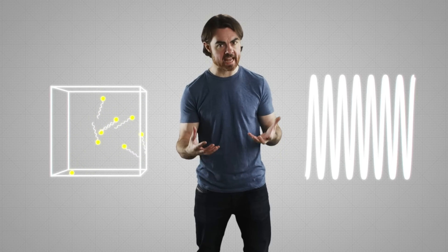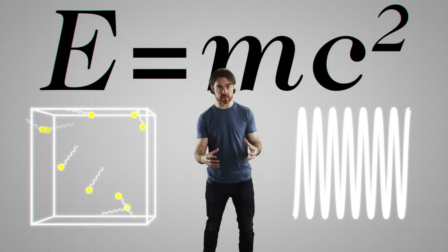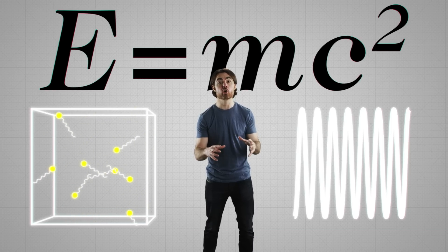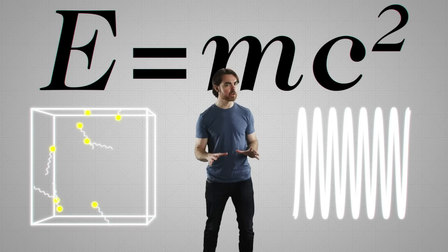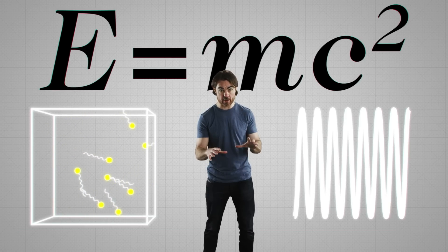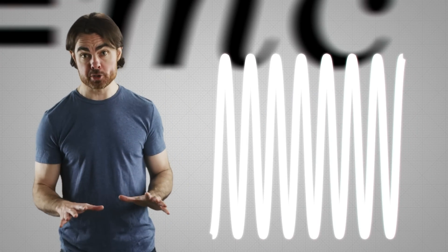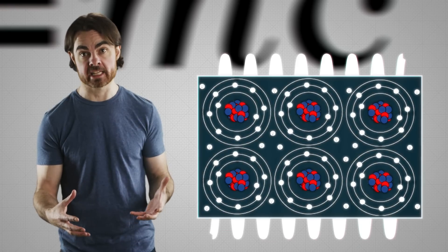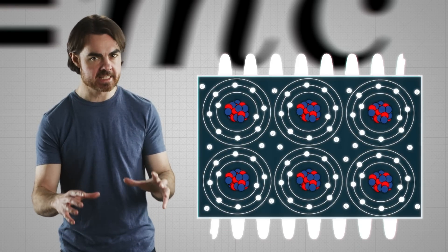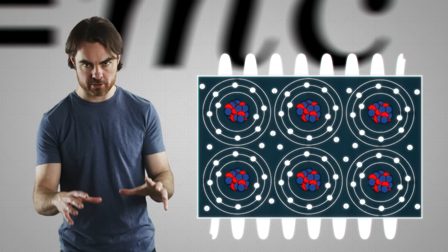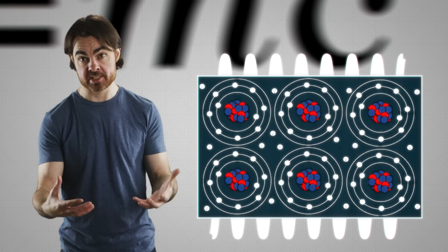These seemingly very different physical effects, the box of photons and the compressed spring, both give the same translation between mass and energy, E equals mc squared, because the underlying cause is the same, the confinement of interactions that themselves travel at the speed of light. Photons in the photon box, but even in the spring, the density wave is ultimately communicated by electromagnetic interactions between the atoms. That, itself, is a speed of light interaction, even if the resulting density wave isn't.